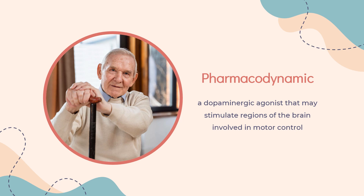Apomorphine is a dopaminergic agonist that may stimulate regions of the brain involved in motor control. It has a short duration of action and a wide therapeutic index, as large overdoses are necessary for significant toxicity. Given the incidence of nausea and vomiting, treatment with trimethobenzamide may be recommended prior to or during therapy, started 3 days before beginning apomorphine and generally continued no longer than 2 months.